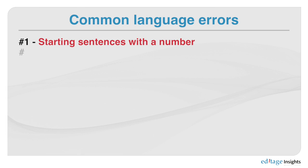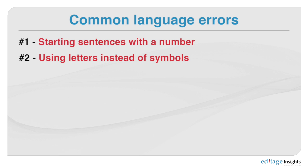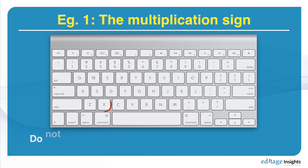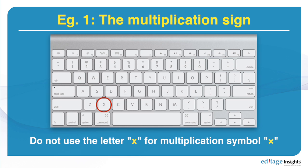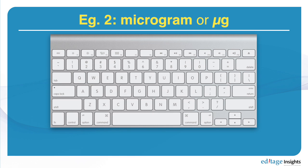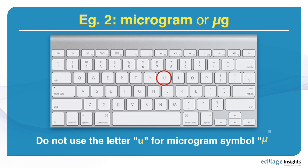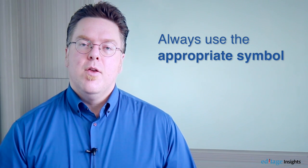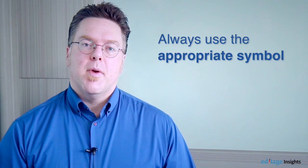Mistake number two is common when people are writing a draft. When writing a draft, they don't like to insert the proper symbols. When using a multiply sign, it isn't the X on the keyboard. For the micro symbol — for example, when saying 100 microgram per milliliter — micro is not a U. It's a different symbol. It's important to put the proper symbol in your paper when you submit it for publication.